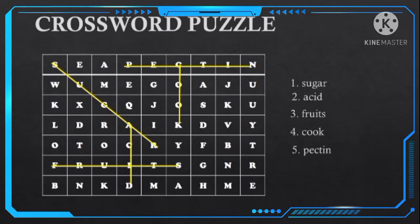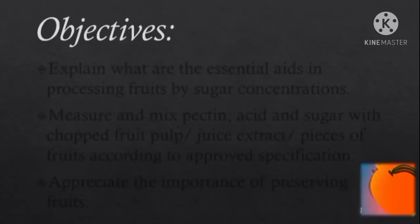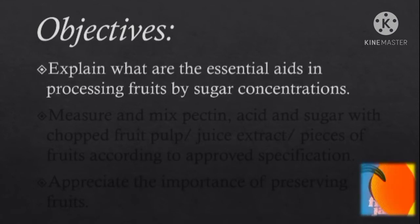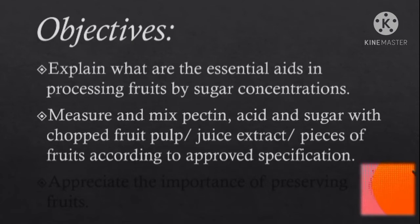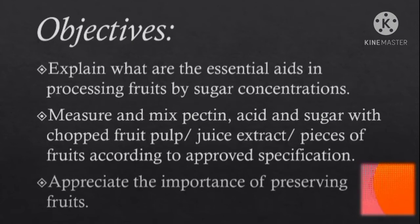Very good class! So how do you find your activity so far? So this time, we are ready to discuss how to prepare acid, pectin, and sugar mixture in processing food by sugar concentration. Here are our objectives for today's lesson: explain what are the essential aids in processing fruits by sugar concentration; measure acid and sugar with chopped fruit pulp, juice extract, and pieces of fruits according to the approved specification; and appreciate the importance of preserving fruits.